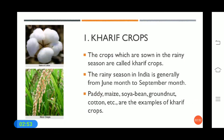Kharif crops are the crops which are sown in the rainy season. The rainy season in India is generally from June to September. Examples of Kharif crops are paddy, maize, soya bean, groundnut, cotton, etc.